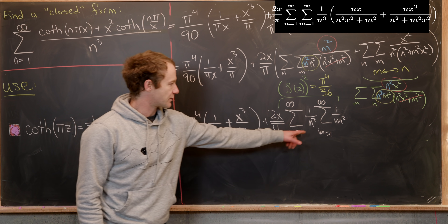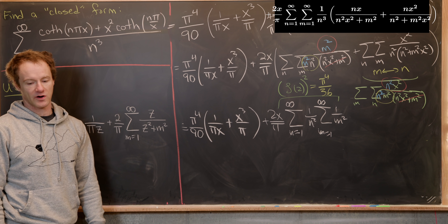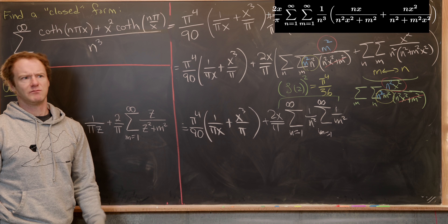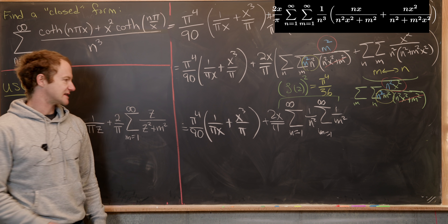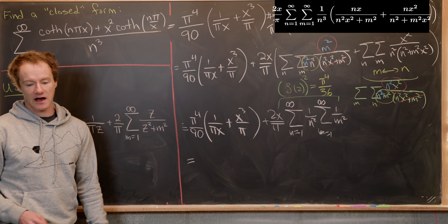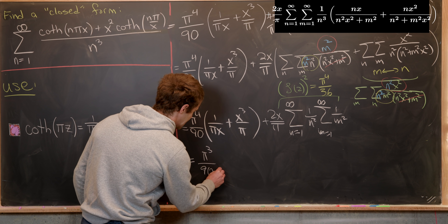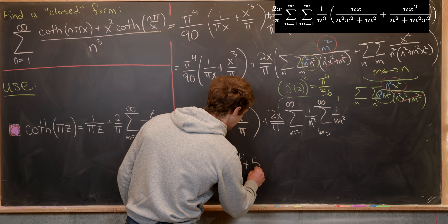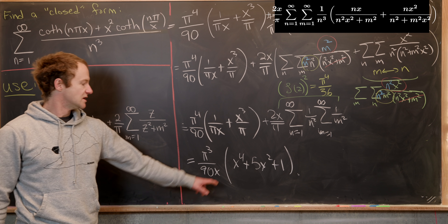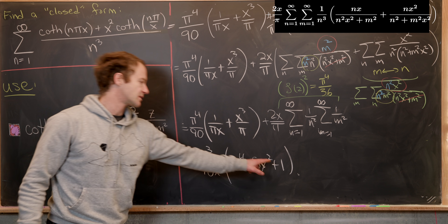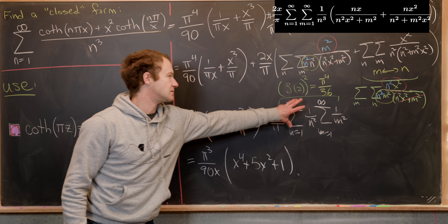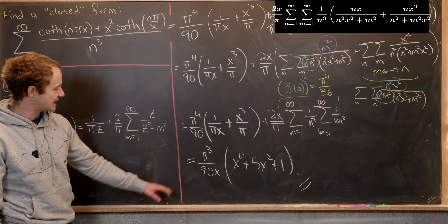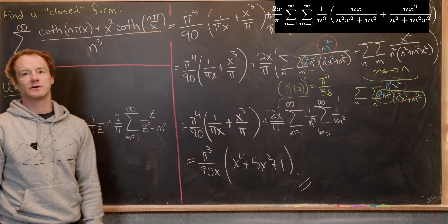Replacing that product of sums with pi⁴/36, we can then factor out everything involving pi and the denominators. After factoring out x from the denominator, the entire expression simplifies to pi³ over 90 times x, times the quantity (x⁴ + 5x² + 1). The x⁴ term comes from one piece, the +1 from another, and the 5x² from the remaining part. So this surprisingly complex infinite series involving the hyperbolic cotangent reduces to just a nice polynomial multiple — and that's a good place to stop.